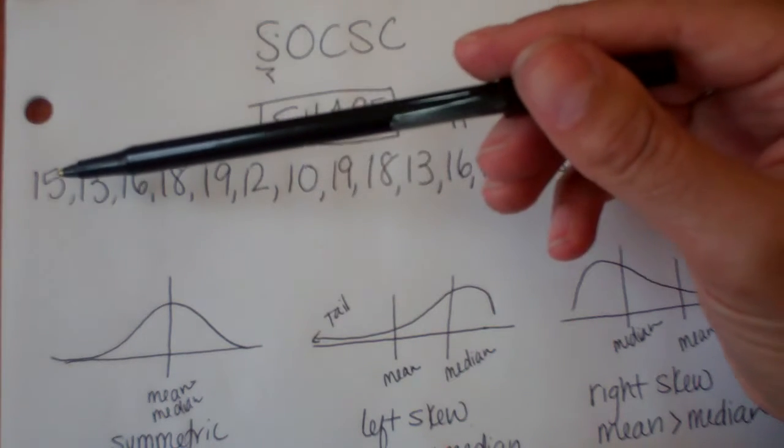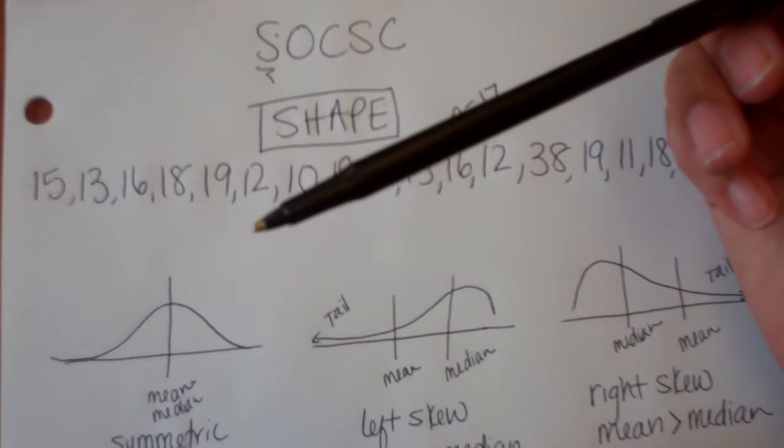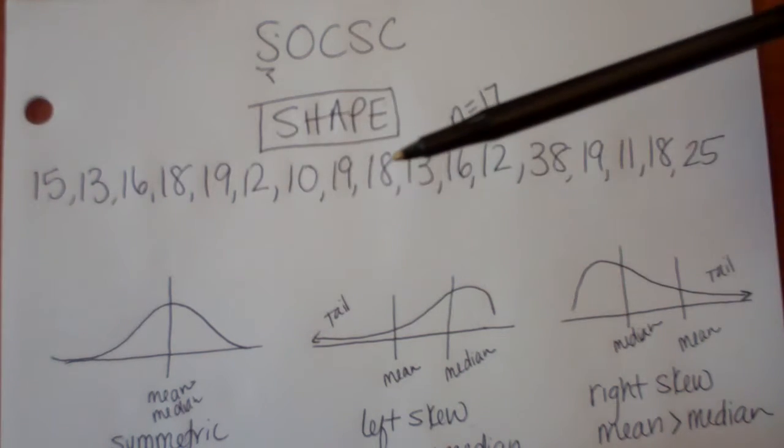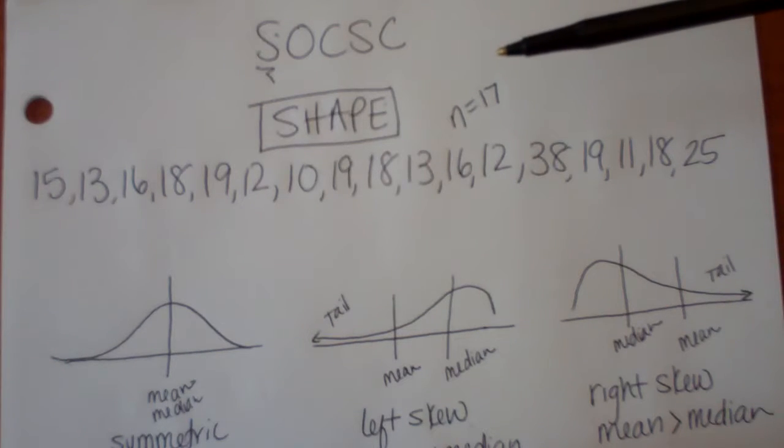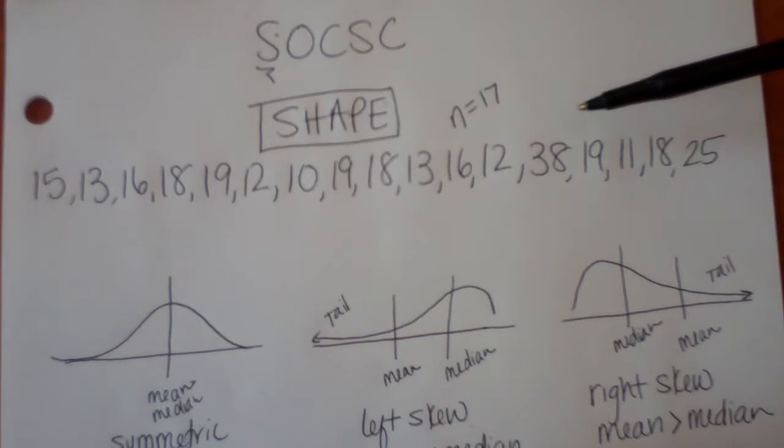So you take a random sample, and you open one bag and there's fifteen Cheetos, open another there's thirteen Cheetos, open another bag there's sixteen Cheetos, so on and so forth. Ooh, look at this thirty-eight. I love Cheetos. I would totally want to get that bag.